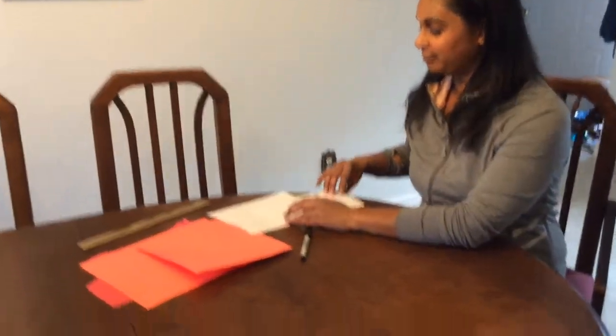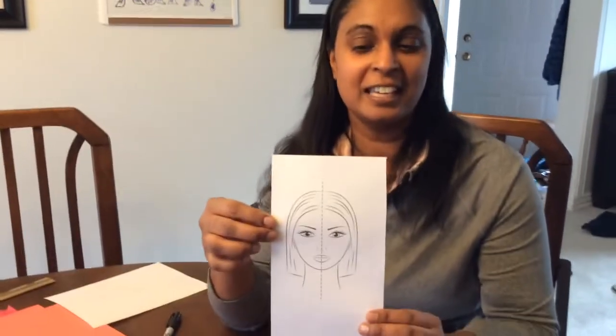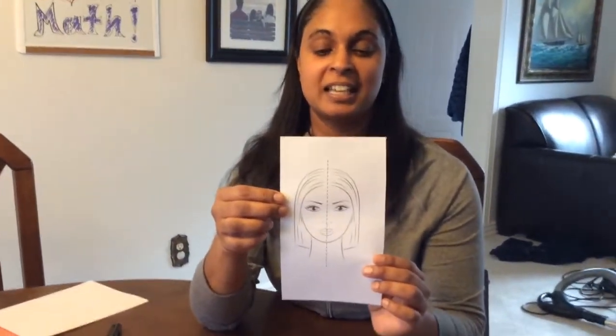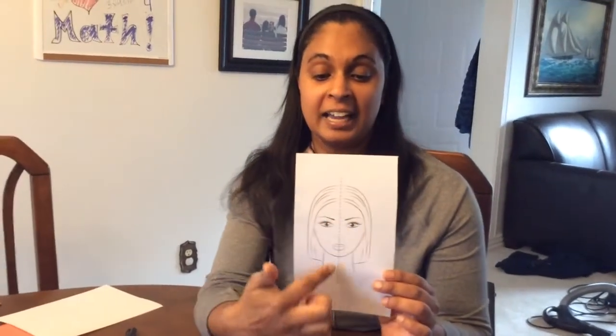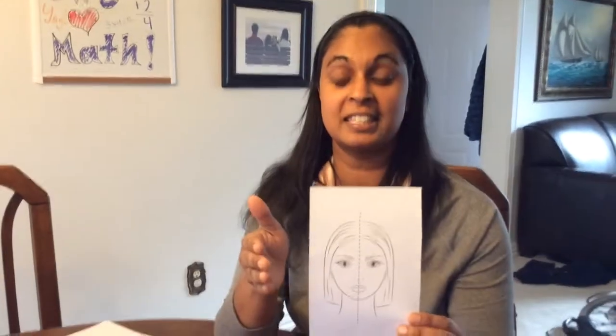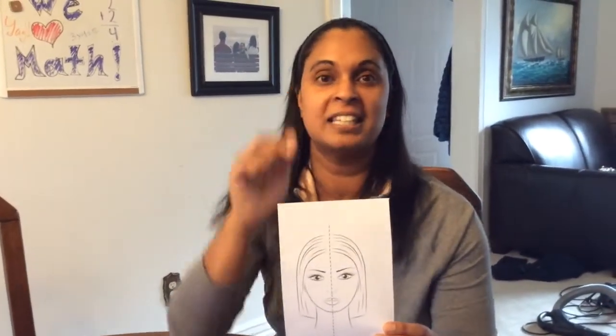A real life example would be a face. A face has matching parts — it is symmetrical. This line down the center of the face is called a line of symmetry, and we can see that the face is the same on both sides, and that's exactly what you're looking for in a symmetrical figure.